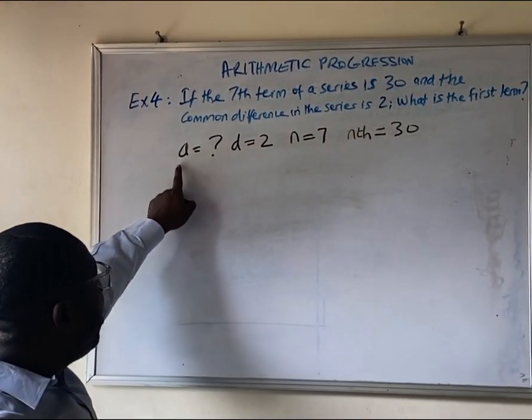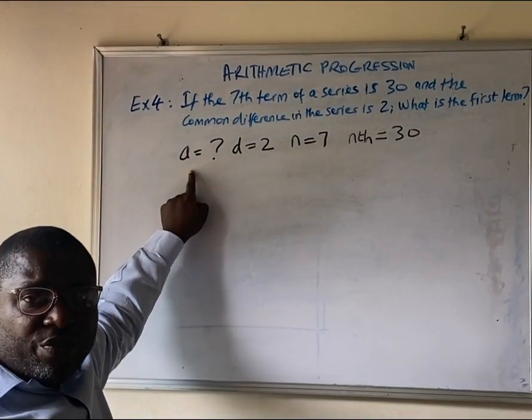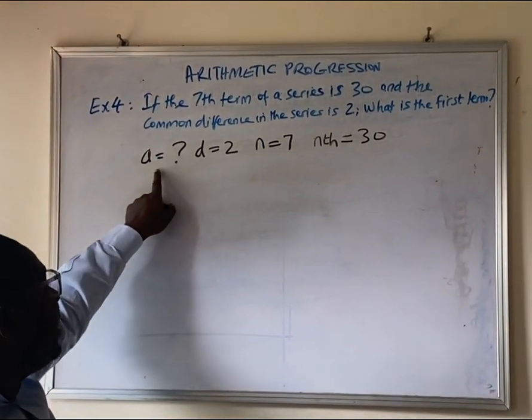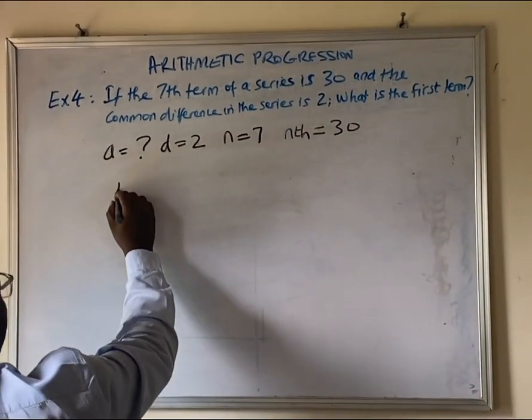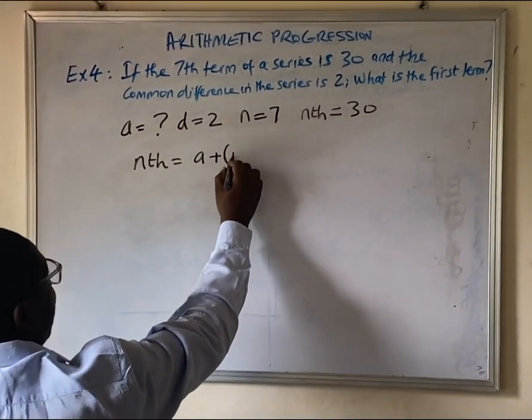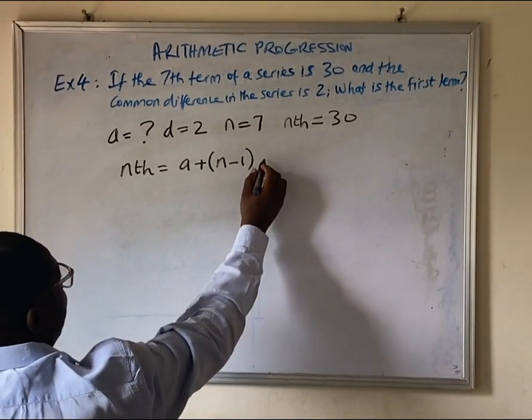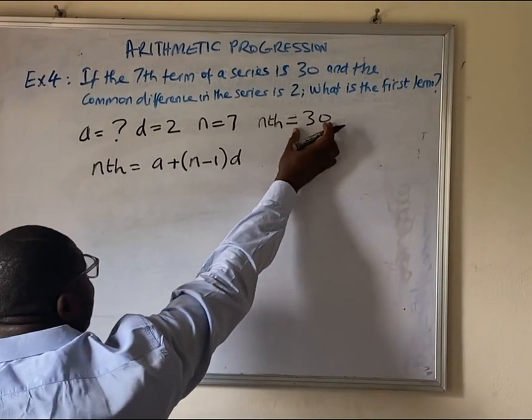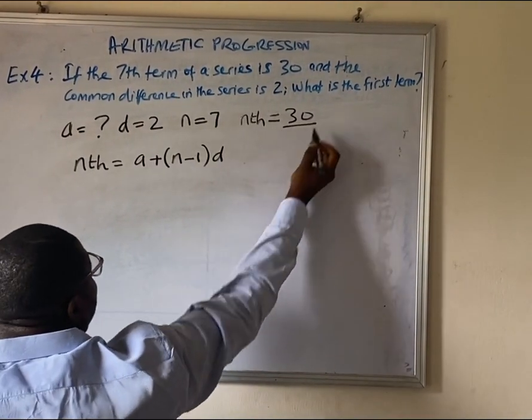So, we now need to use a formula for arithmetic progression to find what a is. The formula for arithmetic progression is nth = a + (n - 1)d. So, we know that the nth term, the 7th term, we are already told, is 30.